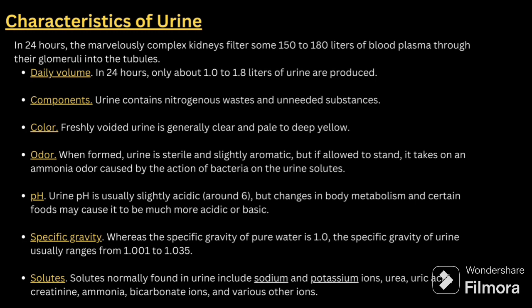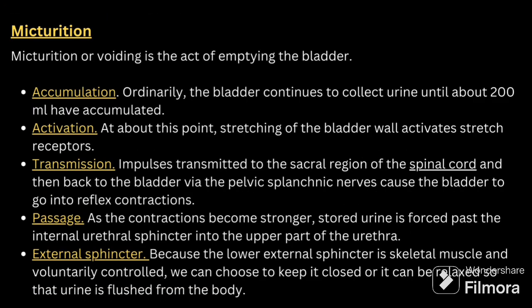Regarding the characteristics of urine: in 24 hours, the kidneys filter about 150 to 180 liters of blood plasma through the glomeruli, but only about 1 to 1.8 liters of urine are produced daily. Urine contains nitrogen waste and unneeded substances. Freshly voided urine is clear and pale to deep yellow in color. When formed, urine is sterile and slightly aromatic, but if allowed to stand, it takes on an ammonia odor due to bacterial action. Urine pH is slightly acidic, around 6.